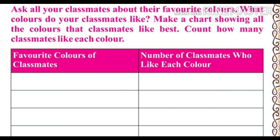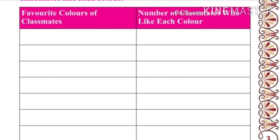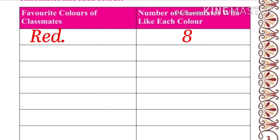Let's start. One column is for favorite colors of classmates, and the other side is for the number of classmates who like each color. Starting with red — 8 students like red color. Yellow — 2.